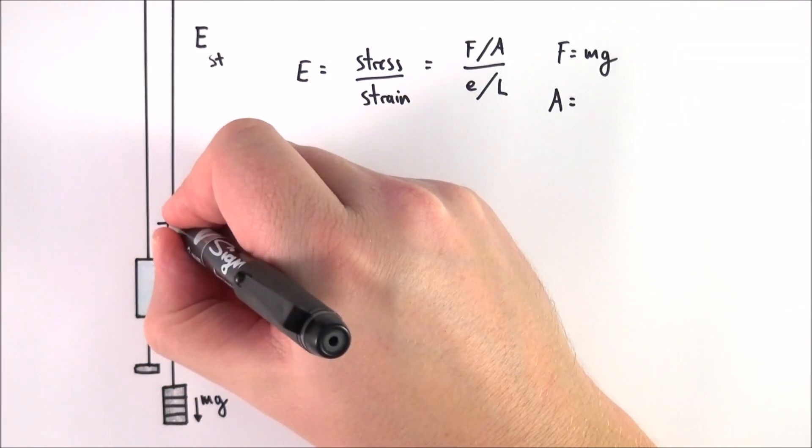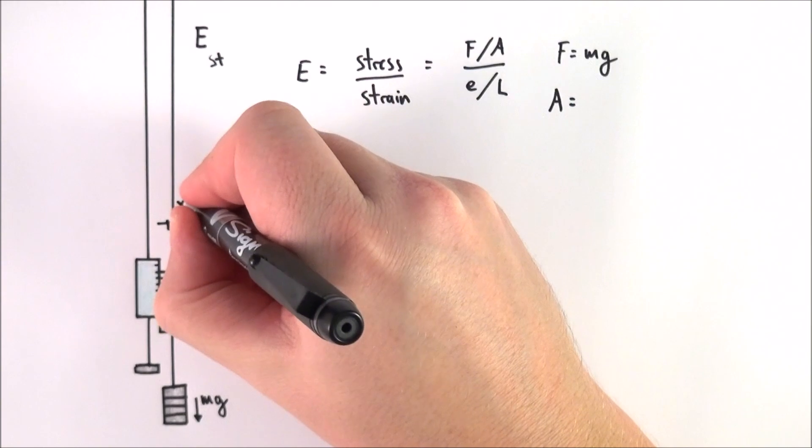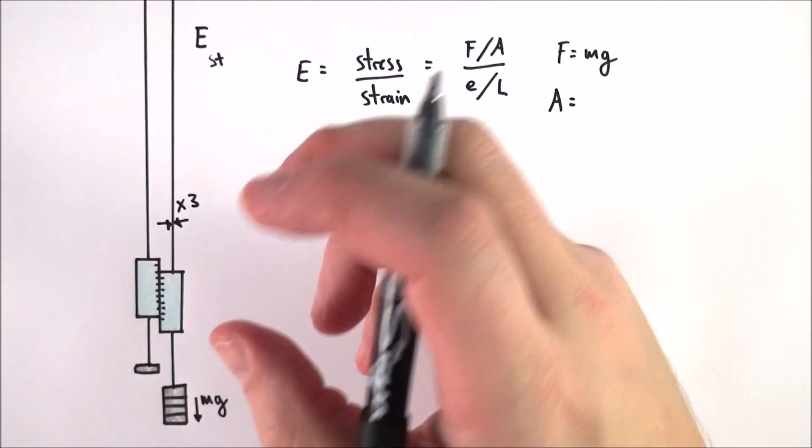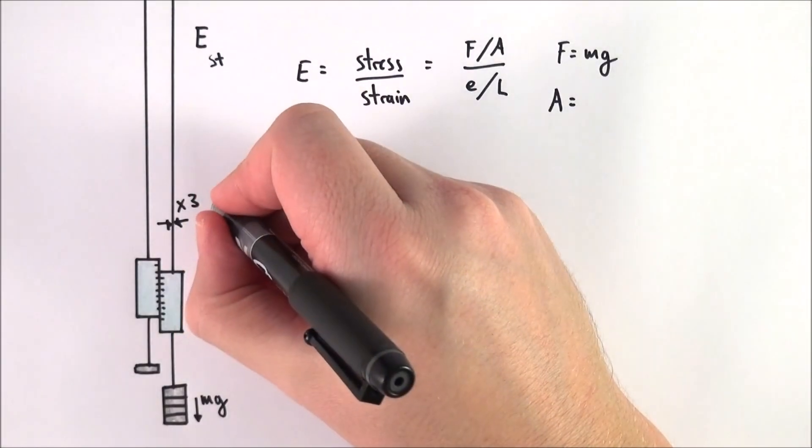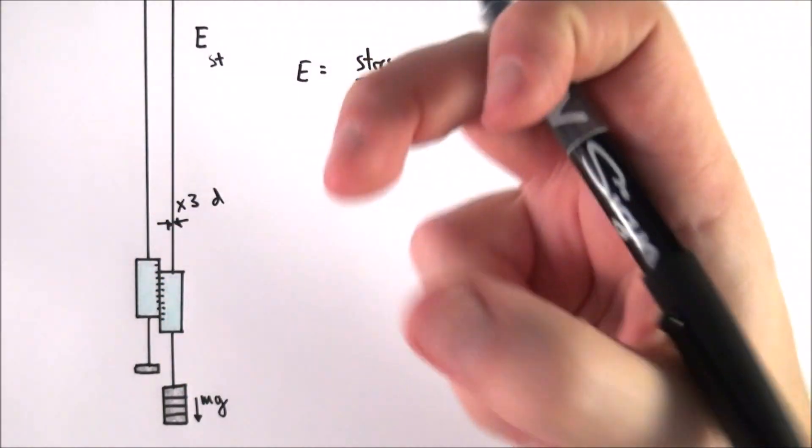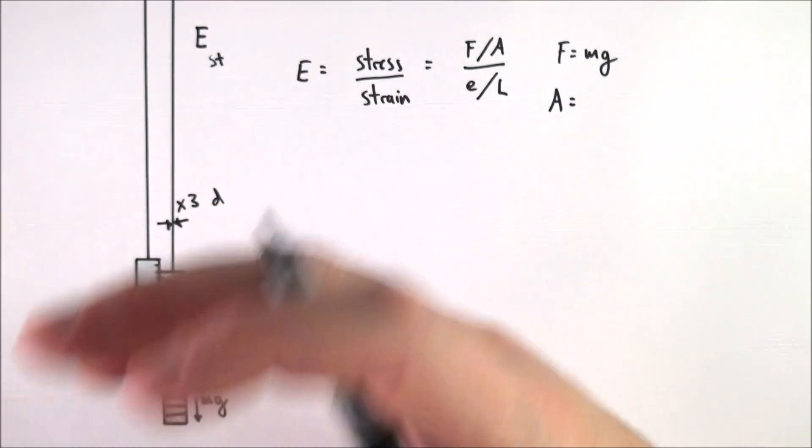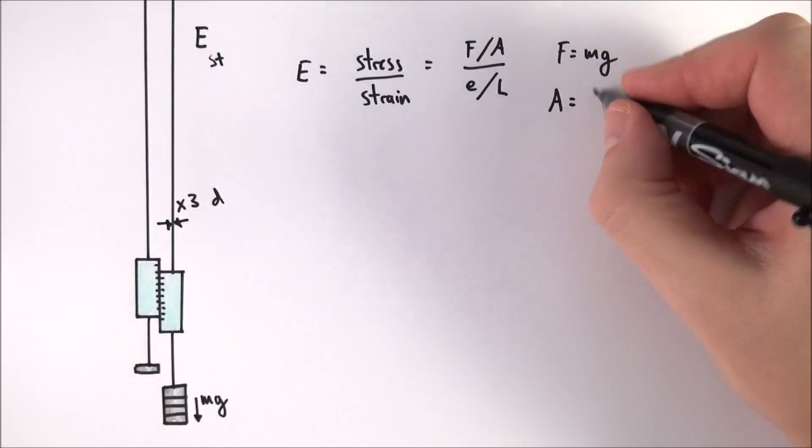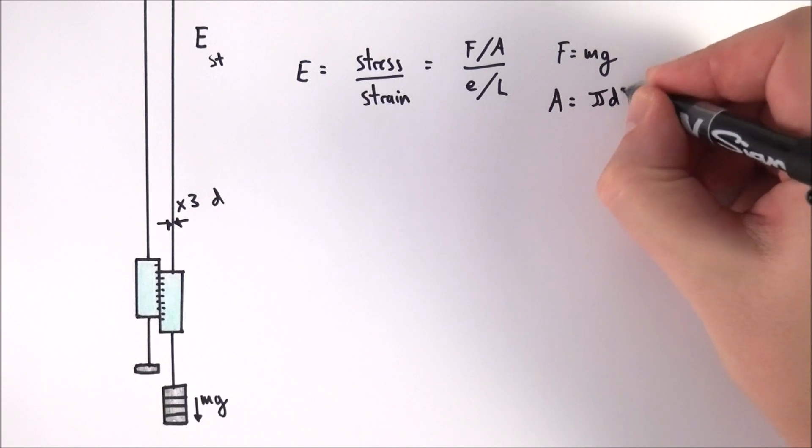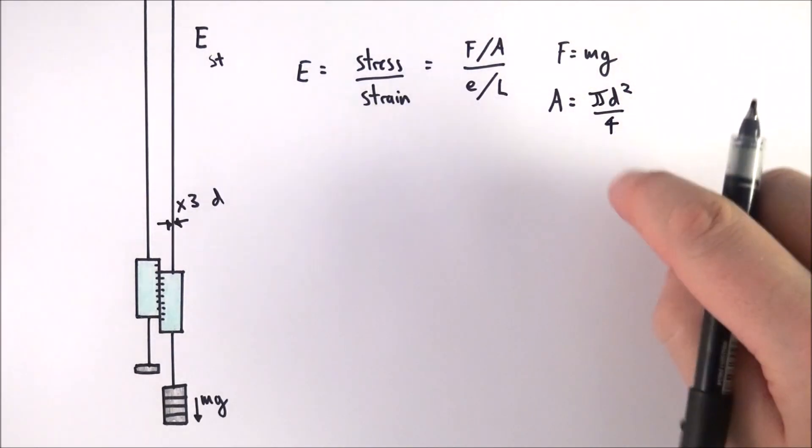Also, the area can be found by measuring the diameter of this wire. If you're going to measure the diameter, you need to make sure that you measure it three times using a micrometer to get a good average, because this is often a point where you get quite a lot of uncertainty in that reading. The area then is equal to πr² or πd²/4, which is just the same equation.